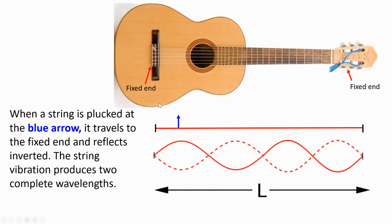When a string is plucked at the blue arrow, it travels to the fixed end and reflects inverted. The string vibration produces two complete wavelengths — one, two — and these come back inverted: one, two.